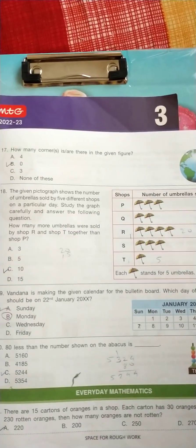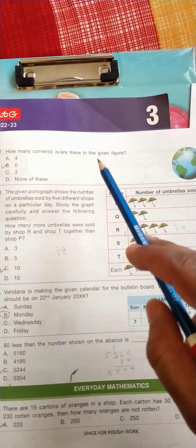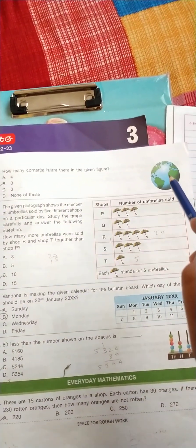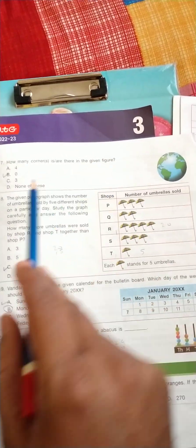Question number 17: how many corners are there in the given figure? So its answer is B, zero.